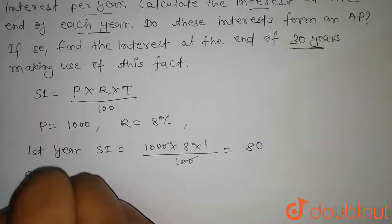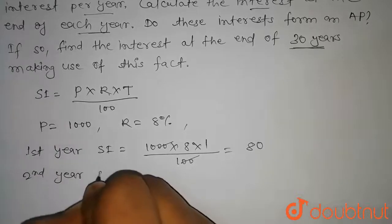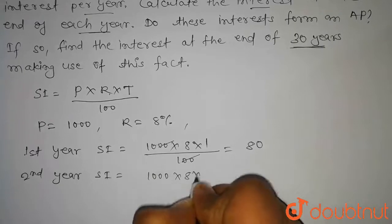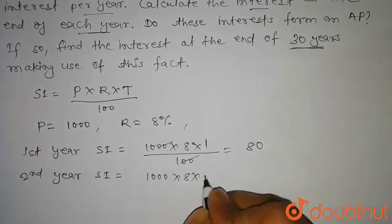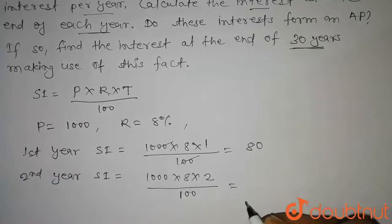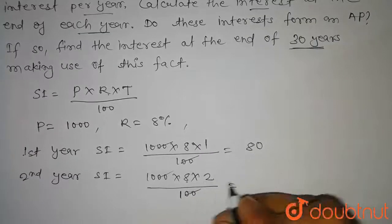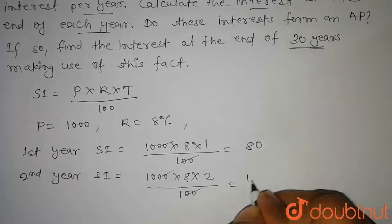Similarly for the second year, SI will be equal to 1000 into 8, and for the second year the time will be 2 years upon 100. This equals 8 into 2, that is 16 into 10, which is 160.